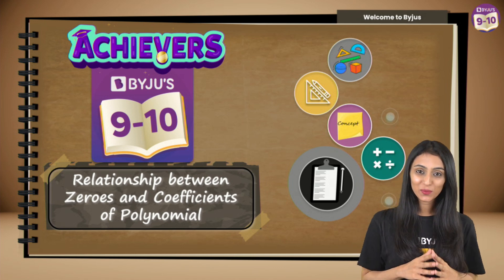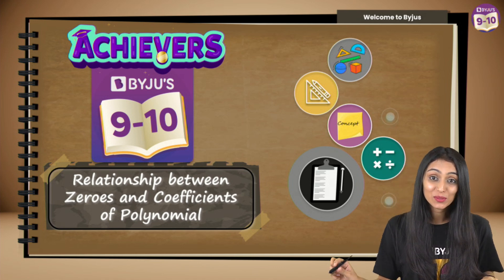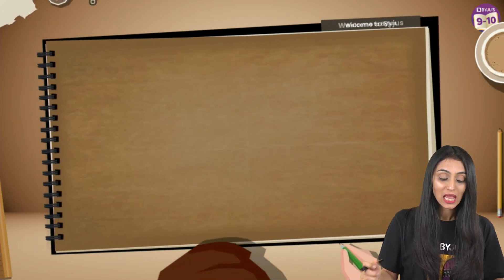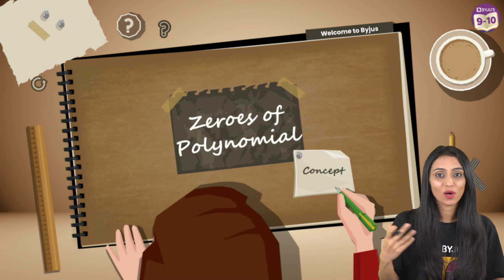Hey everyone, welcome to yet another wonderful session. In this class we are going to be talking about the relationship between zeros and coefficients of a polynomial. We are going to use the zeros of the polynomial concept.